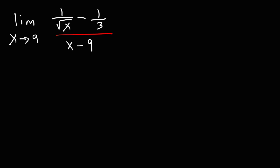Now because we have a complex fraction, that is fractions within a fraction, what we want to do is we want to get rid of those fractions. And we can do this by multiplying the top and the bottom of the large fraction by the common denominator of these two fractions. And so we're going to multiply the numerator by 3 square root x and whatever you do to the top you must also do to the bottom. So we're going to multiply the denominator by 3 square root x.